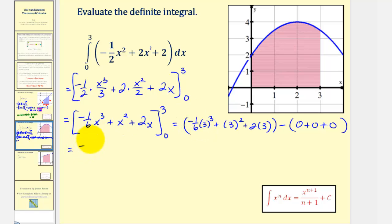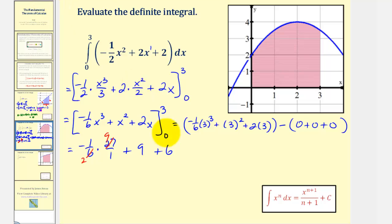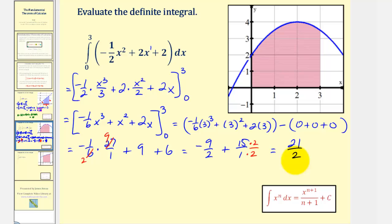Simplifying: we have negative one-sixth times twenty-seven, which is negative twenty-seven over six, plus nine, plus six. There's a common factor of three, giving negative nine-halves plus fifteen, or plus fifteen over one. With a common denominator of two, that's negative nine-halves plus thirty-halves, which is twenty-one-halves. So the value of the definite integral is twenty-one-halves, and because the integrand is non-negative on the closed interval from zero to three, the area of the shaded region is twenty-one-halves, or ten and a half square units.